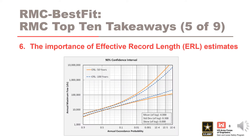Number six is the importance of computing defensible effective record length, or ERL estimates, which are a measure of our uncertainty. The longer our effective record length, the less uncertainty we have in our flow frequency analysis.